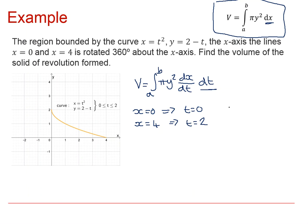So our volume, and the last thing that we need is we need to know what dx/dt is. We know that X is T squared, so dx/dt must be 2t.